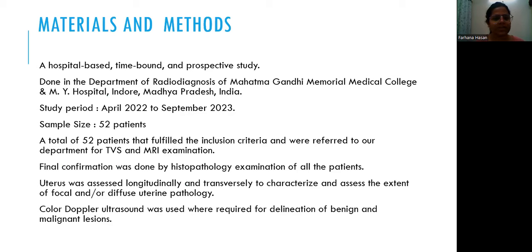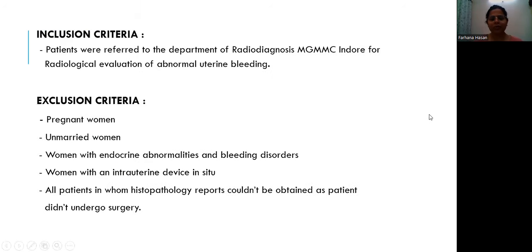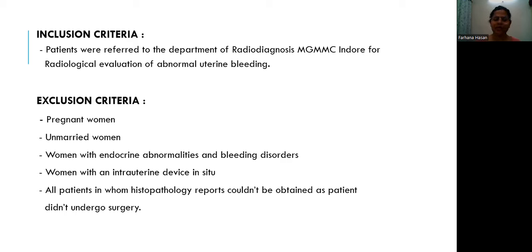This is a prospective hospital-based study. Referred patients fulfilling the inclusion and exclusion criteria were taken. Final confirmation was done by histopathological examination and color Doppler was also used. Inclusion criteria: patients referred to the department of radiodiagnosis for radiological evaluation of abnormal uterine bleeding. Exclusion criteria: pregnant women, unmarried ones, women having endocrine abnormalities and bleeding disorders, women with an intrauterine device, and all patients in whom histopathological reports couldn't be confirmed.